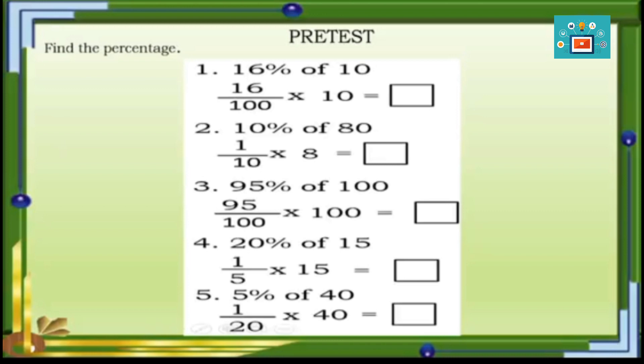Number four: 20% of 15. As you can see, 20% is renamed into fraction as one-fifth times 15. The preposition 'of' means times or multiply. Number five: 5% of 40 — 5% is one-twentieth in fraction, times 40. I'm giving you ten seconds to answer these questions and your timer starts now.